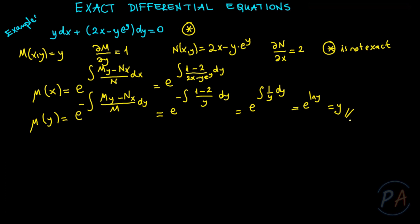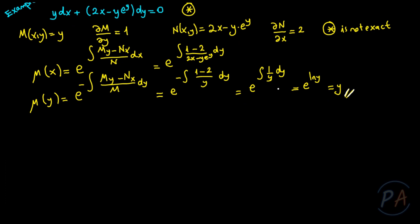So I determine a much simpler integrating factor by choosing μ as a function of only y. You can see that if I had chosen the function of only x, the integral in the exponential is not easy to calculate. But choosing μ as a function of y, I determine it easily as μ(y) = y. It is better to use μ as a function of only y, so let me multiply the given equation by this integrating factor.